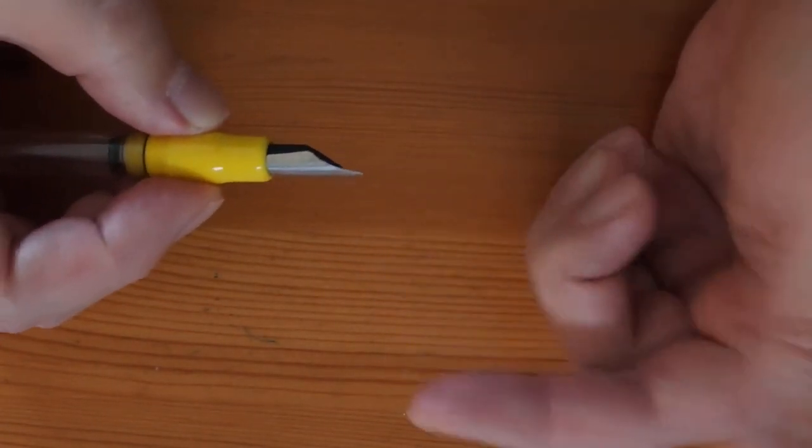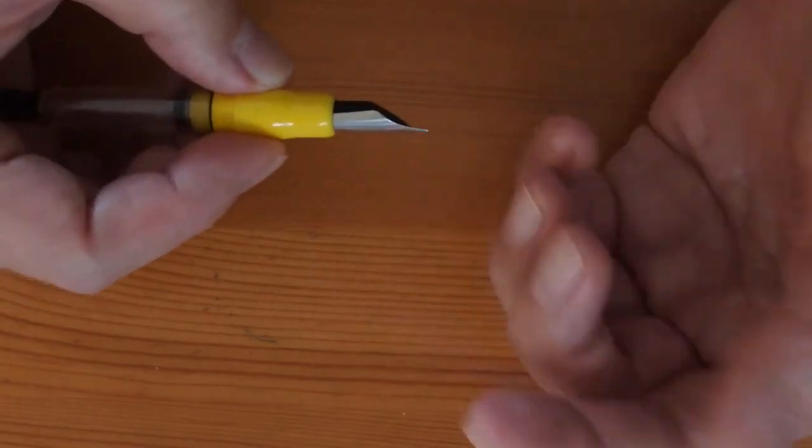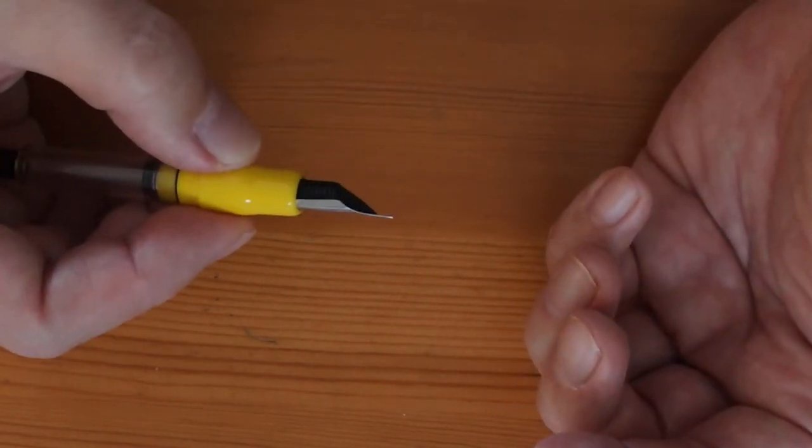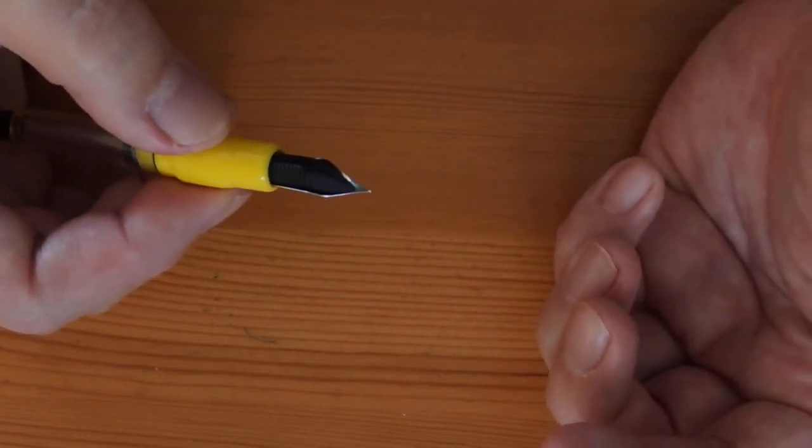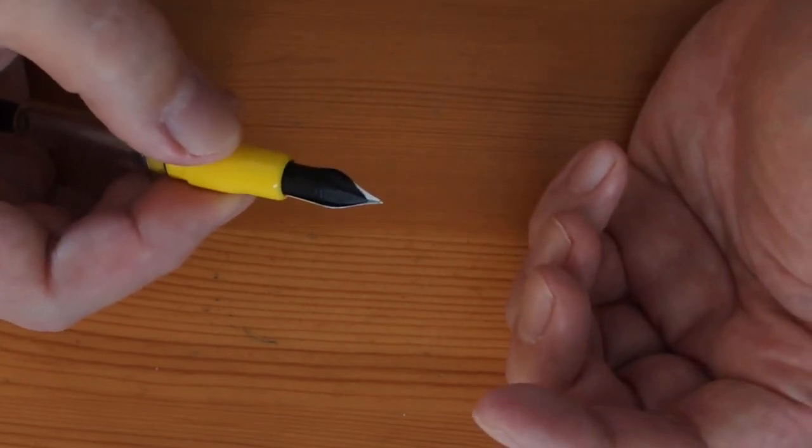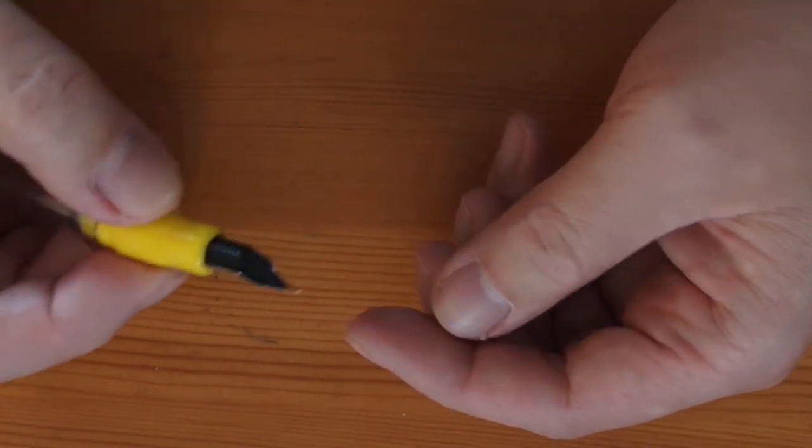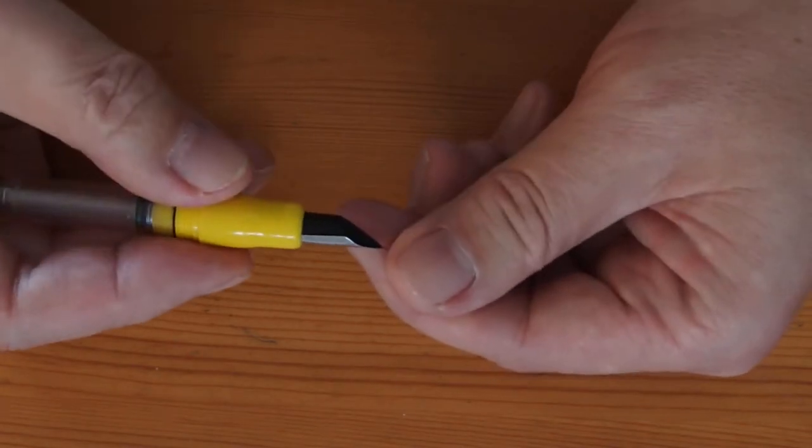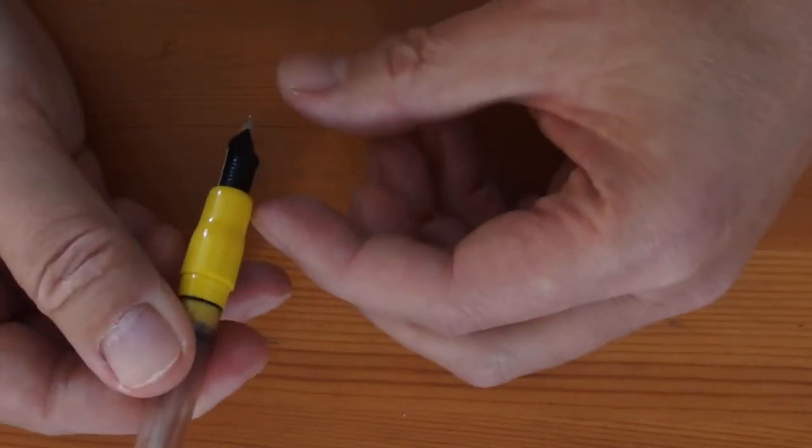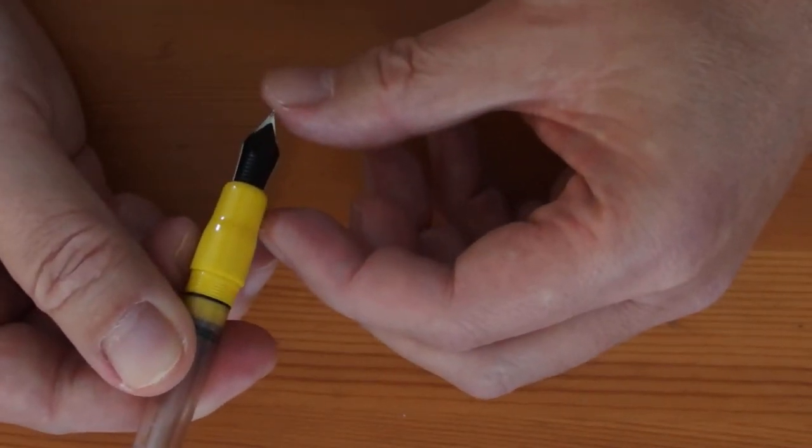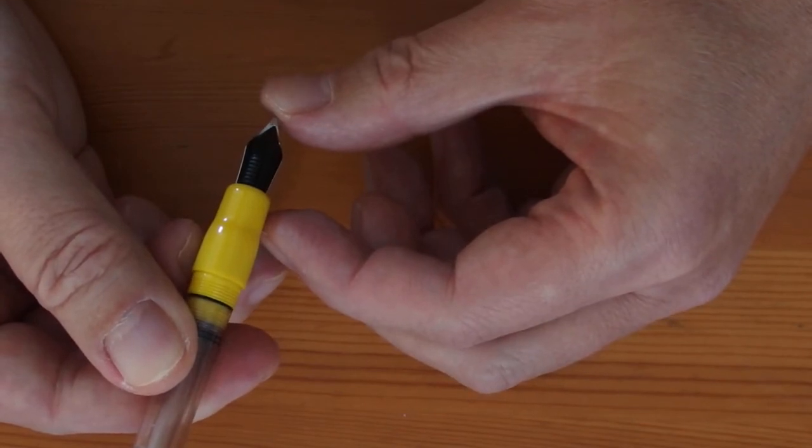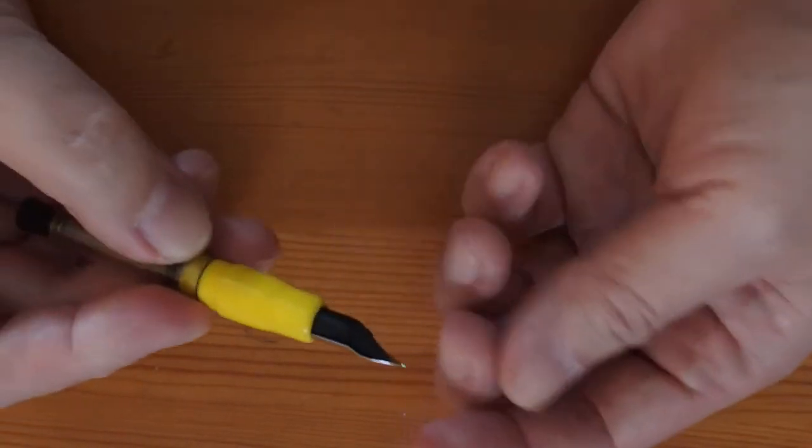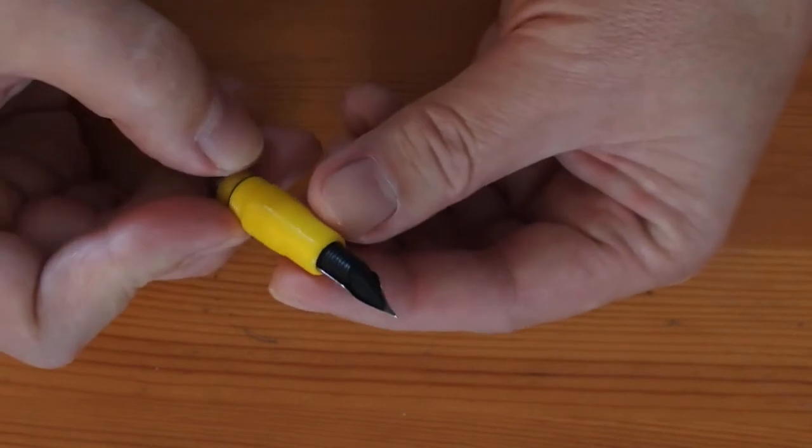Heat setting the nib would make a big difference. The feed is made out of ebonite and it can distort slightly when heated. My preferred way is to get it properly assembled and then dip the nib and feed into a cup of freshly boiled water for about 30 seconds. And then use the thumb and fingers to press the nib and feed together until they cool down.